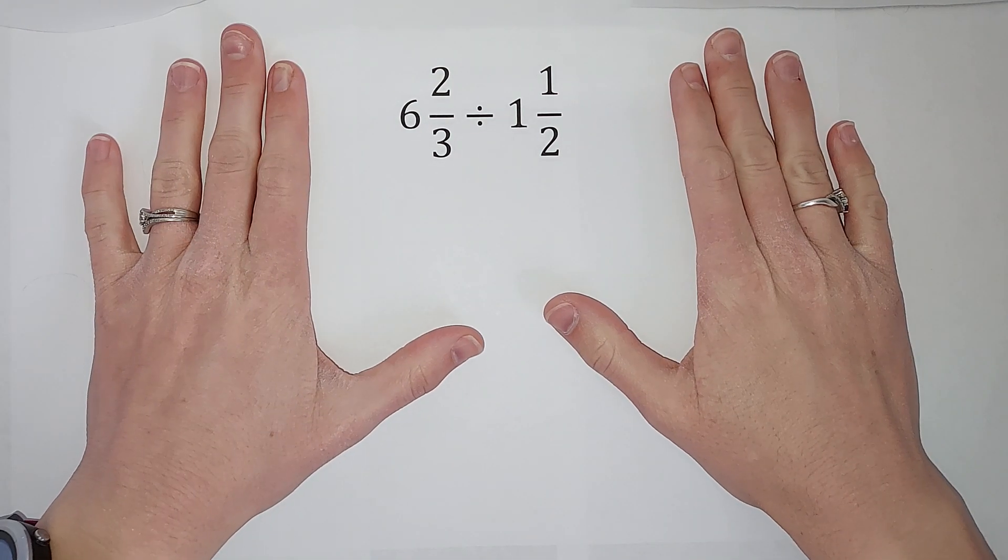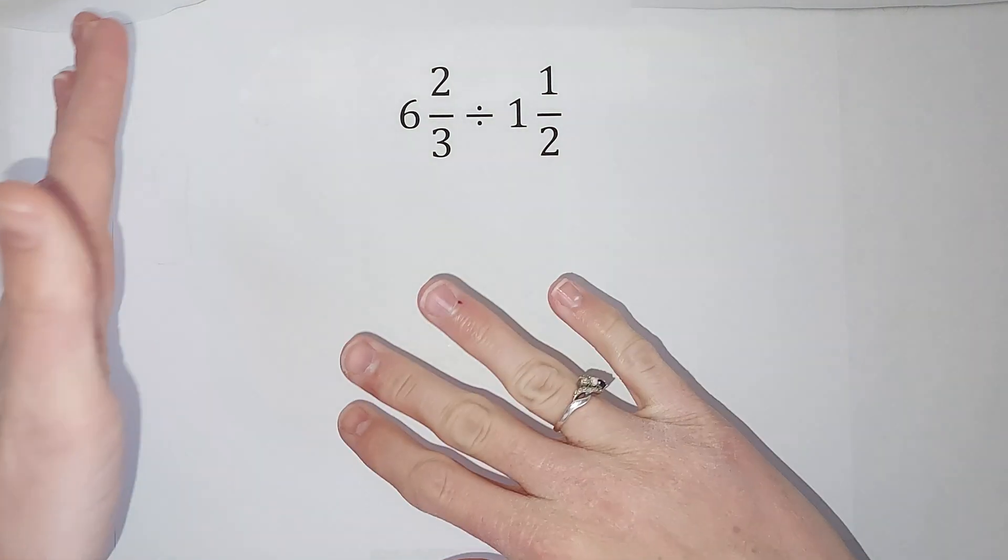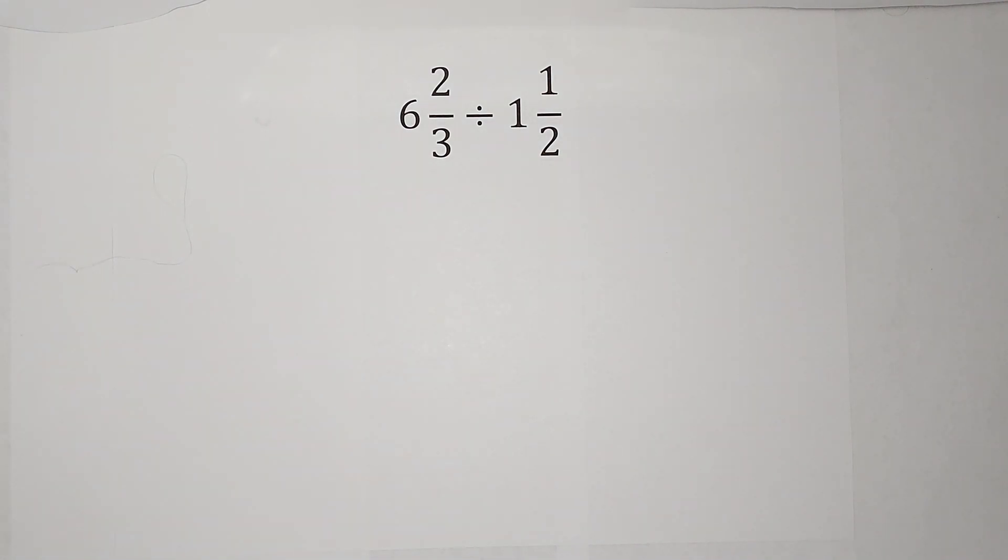Hey guys, we are dividing a mixed number by a mixed number. Six and two-thirds divided by one and a half.